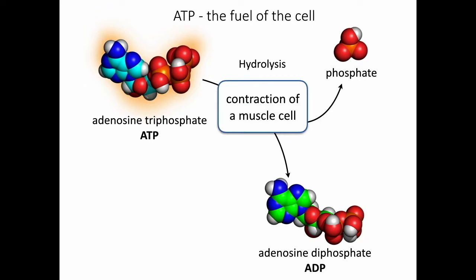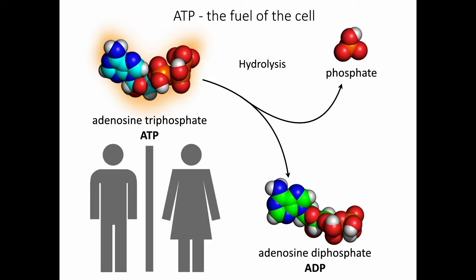For example, contraction of a muscle cell, synthesis of different molecules, or an electric impulse of a nerve cell. All these processes require a constant supply of ATP.